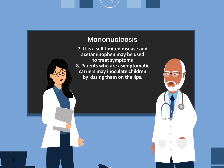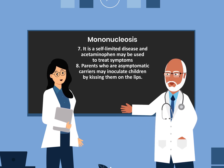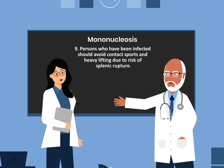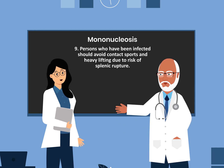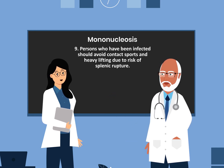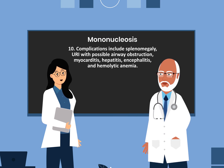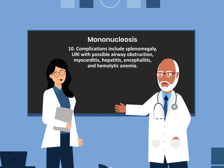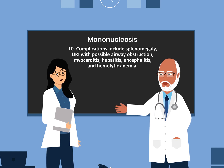Number eight, parents who are asymptomatic carriers may inoculate their children by kissing them on the lips. Number nine, persons who have been infected should avoid contact sports and heavy lifting due to the risk of splenic rupture. Number ten, complications include splenomegaly, upper respiratory infection with possible airway obstruction, myocarditis, hepatitis, encephalitis, and hemolytic anemia.